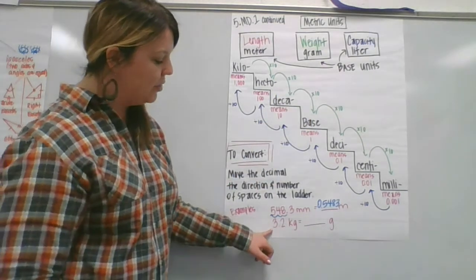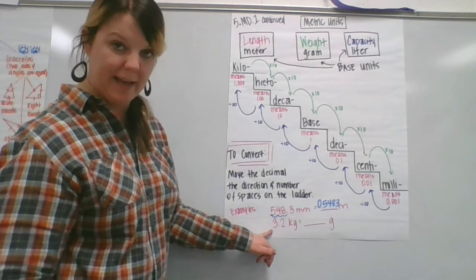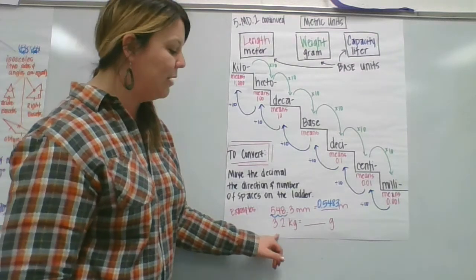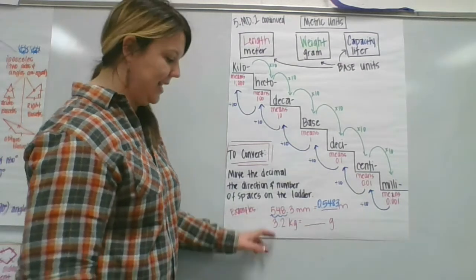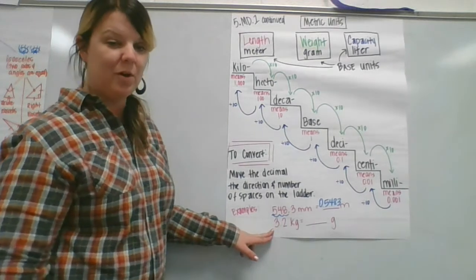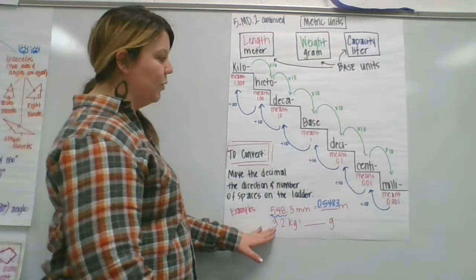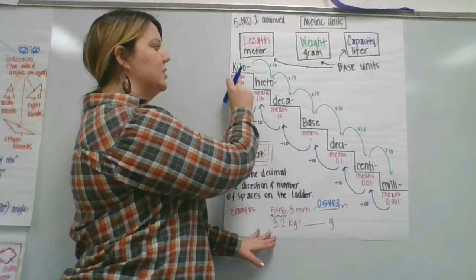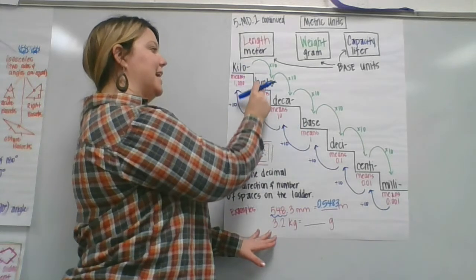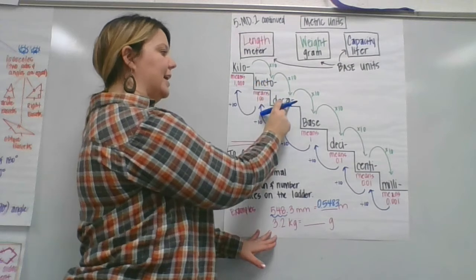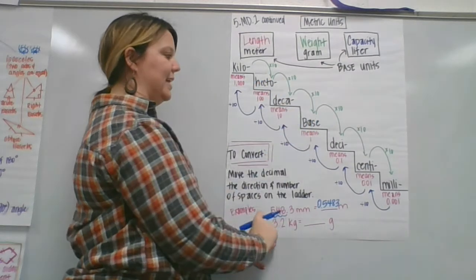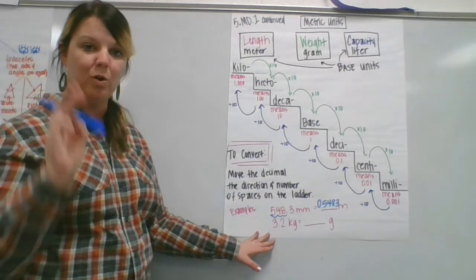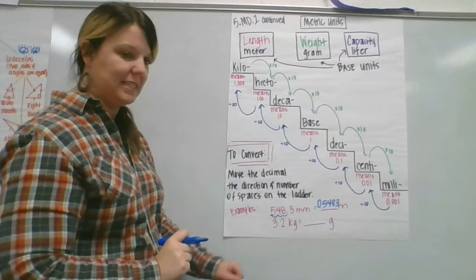So when we look at 3.2 kilograms, grams is our base unit, and we want to know how many grams that is, we're going to shift our decimal again. Count the places. So we're at kilograms at the top, and we want to go to grams, which is the base unit. So that's going to be times 10, times 100, times 1,000, or we're going to shift that decimal three places to make this number larger.